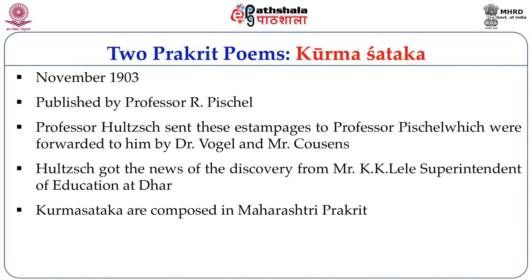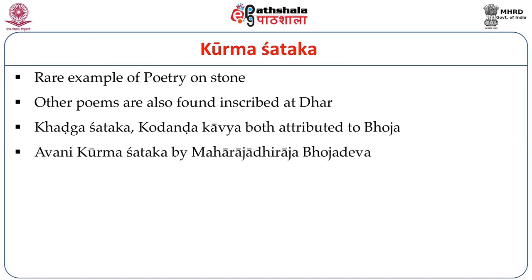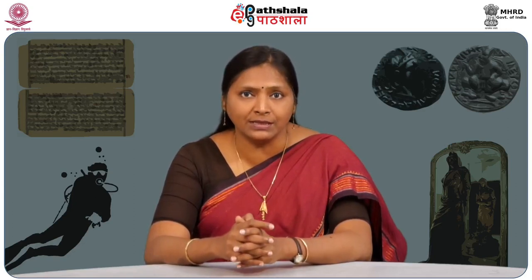The first Kurma Shattaka is known as the Avani Kurma Shattaka and is mentioned as being composed by Maharaja Dhiraj Bhoja Deva. These are rare examples of poetry on stone. Other poems at Dhar include the Kharga Shattaka and Kodanda Kavya, both attributed to Bhoja. The second Kurma Shattaka actually praises Bhoja himself, so it cannot be attributed to the king — he would not praise himself — suggesting it was composed by someone else, likely a person from South India.